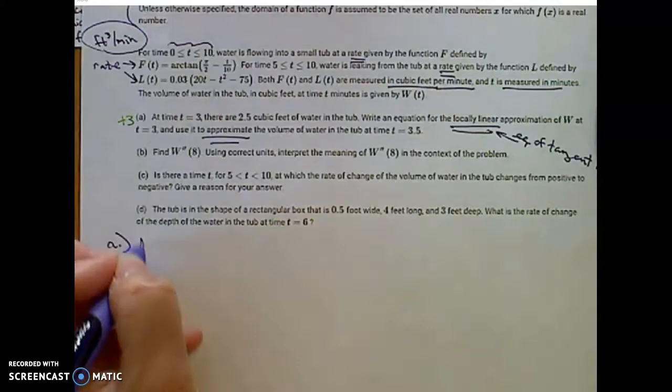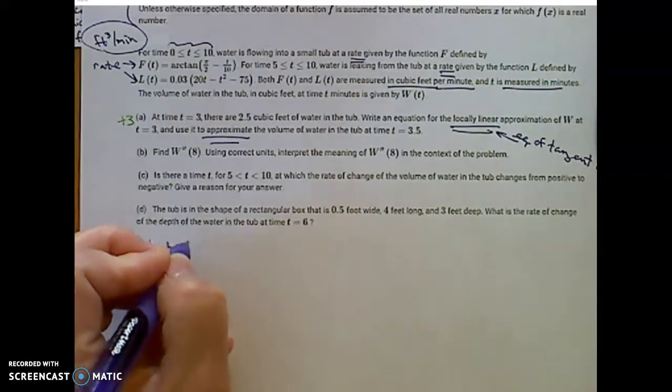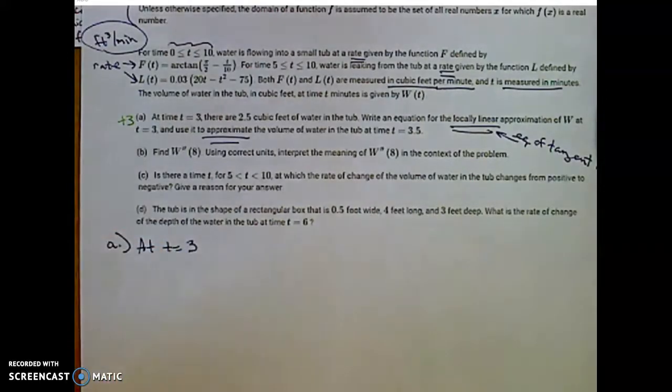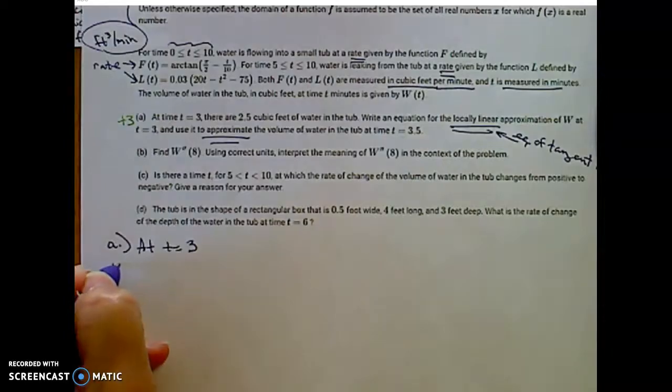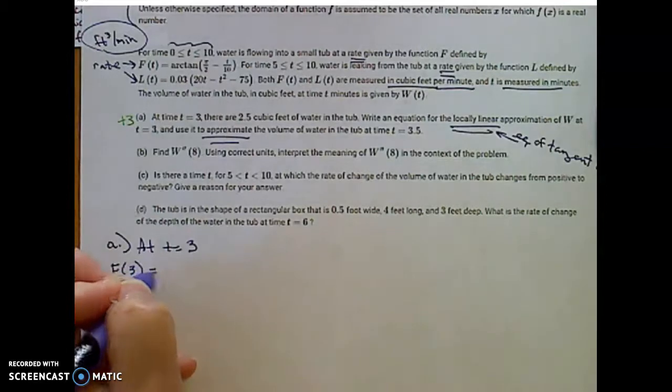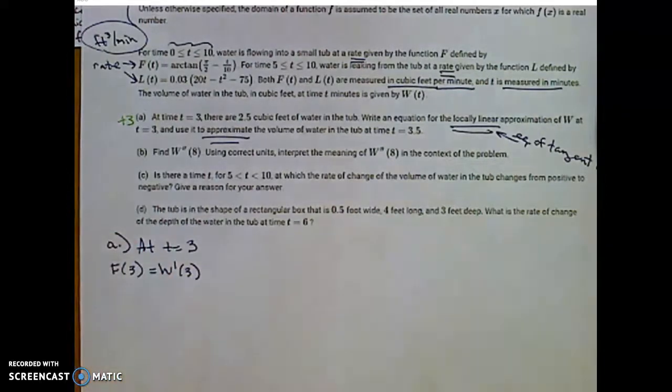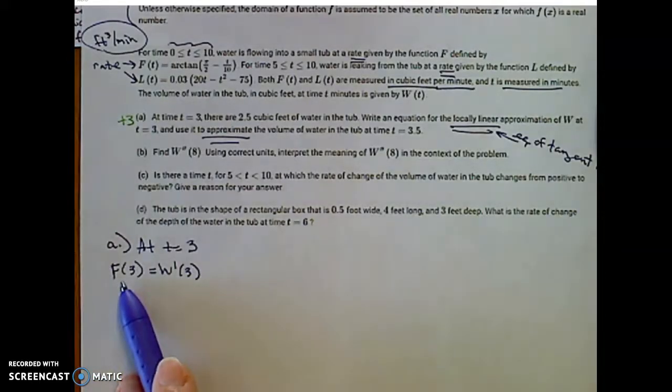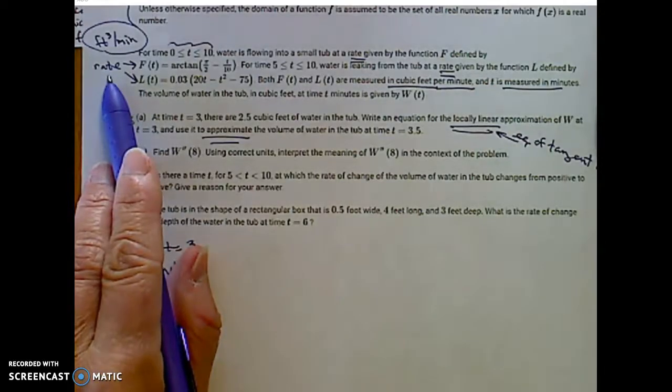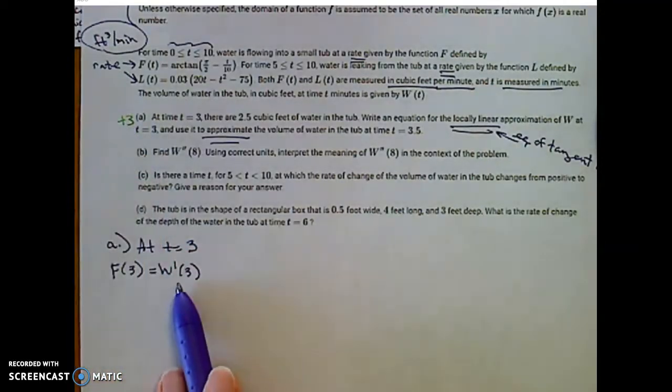But these are rates in that tub at any moment. So really, at time equal to 3, f of 3, which is a rate, is the rate of change of the volume. So since f is a rate, f of 3 is the rate of change at that time, which is the same as w prime of 3.